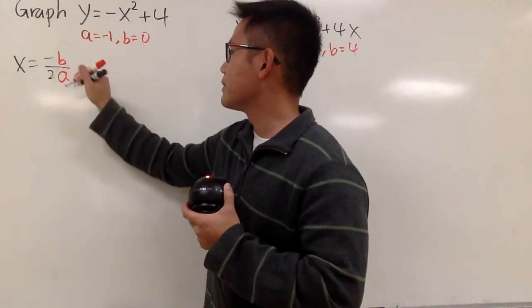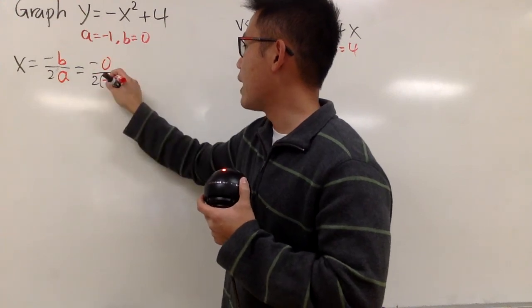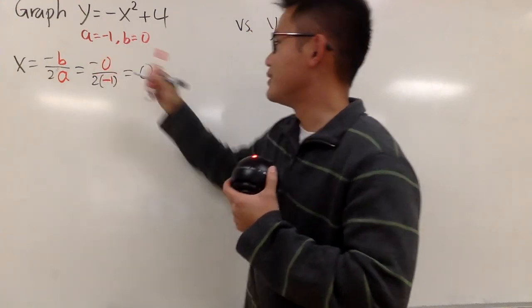But I will still show you guys the work. Negative 0 over 2 times negative 1, like this, and you still get 0.